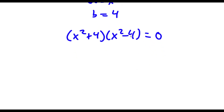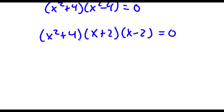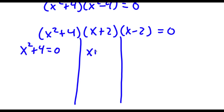Now x squared minus 4 is the same thing as x plus 2 times x minus 2. So now this gives me three equations: x squared plus 4 equals 0, x plus 2 equals 0, and x minus 2 equals 0.